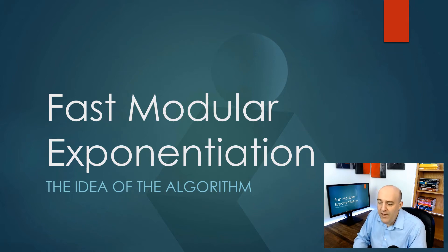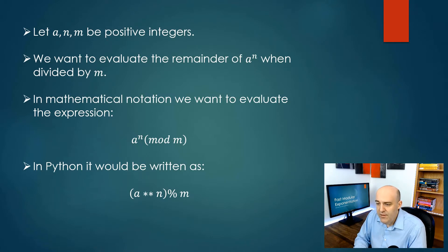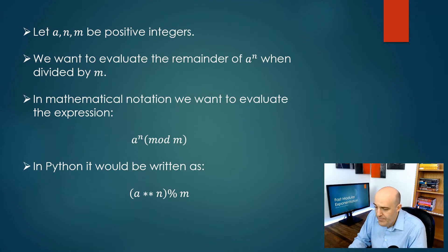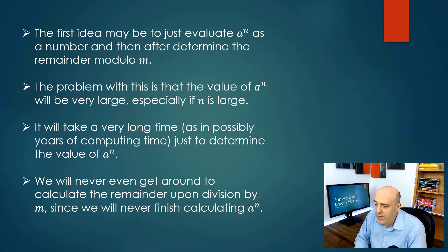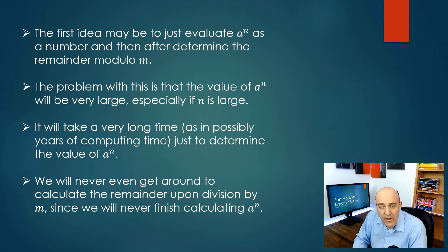In this video, we're going to talk about the idea behind the fast modular exponentiation algorithm. The setup is three positive integers a, n, and m. We would like to evaluate the remainder when we divide a to the n by m — written as a to the n mod m in mathematical notation, or a**n % m in Python. The naive approach of computing a to the n first is problematic because a to the n can be very large, especially if n is large, and it would take an impractical amount of computing time.